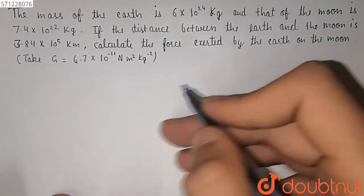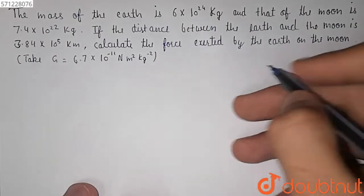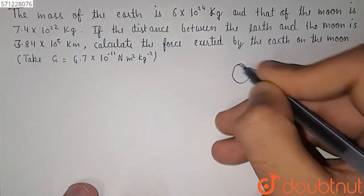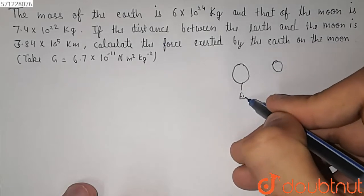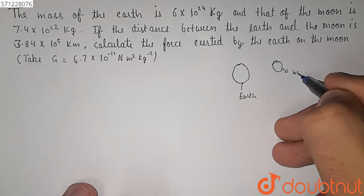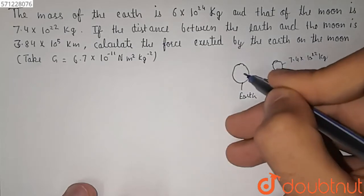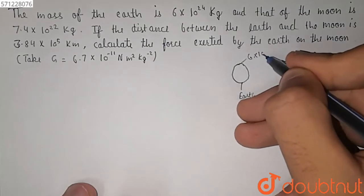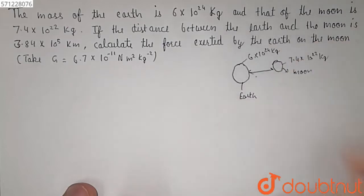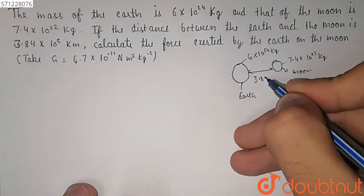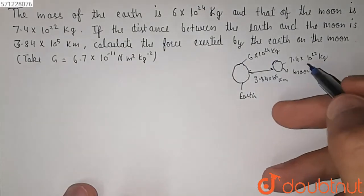Here we have given the mass of the Earth and the mass of the Moon. This is the Earth and this is the Moon. The mass of the Moon is 7.4 x 10 raised to power 22 kg, and the mass of the Earth is 6 x 10 raised to power 24 kg. The distance between them is equal to 3.84 x 10 raised to power 5 km. We have to find the force exerted by the Earth on the Moon.